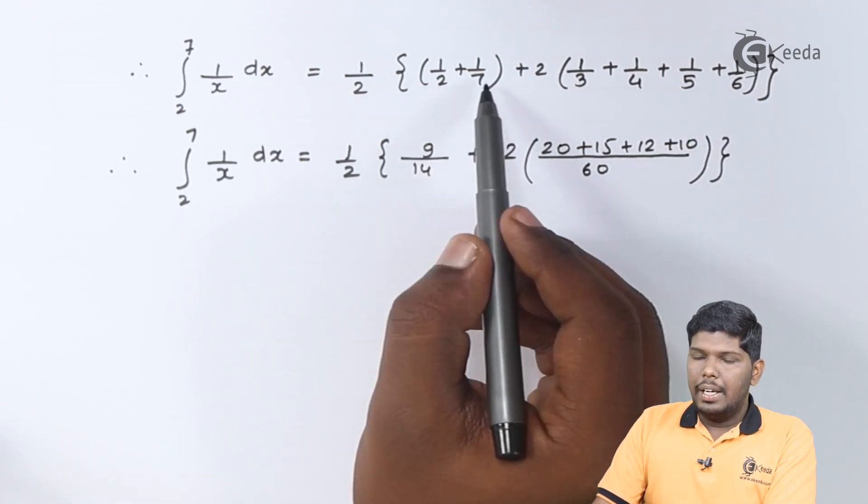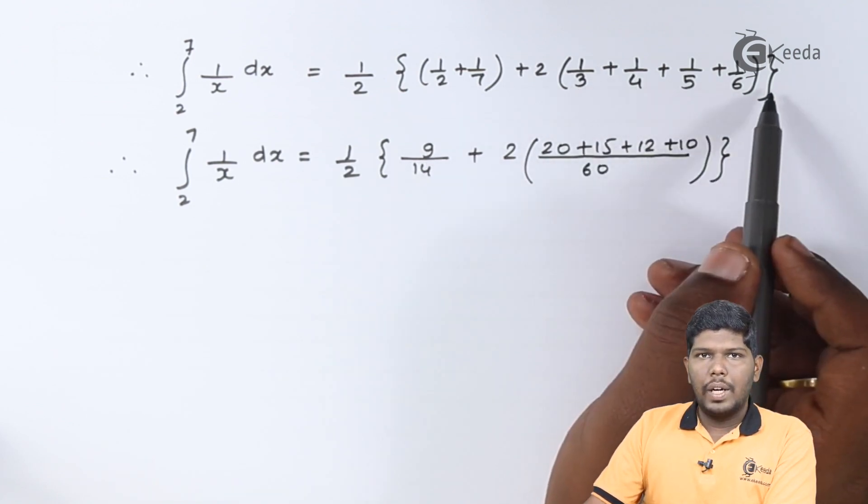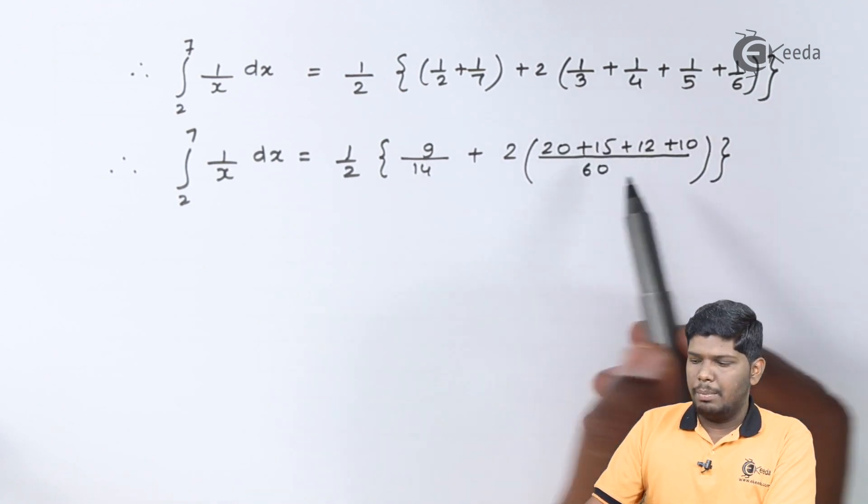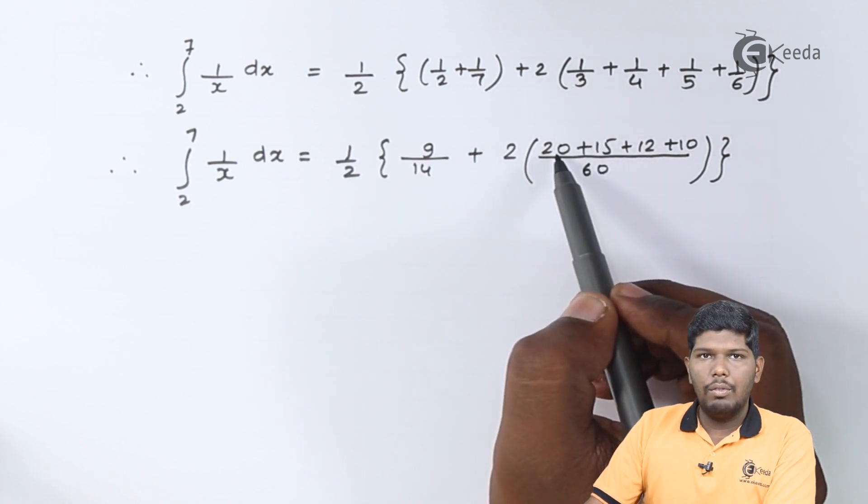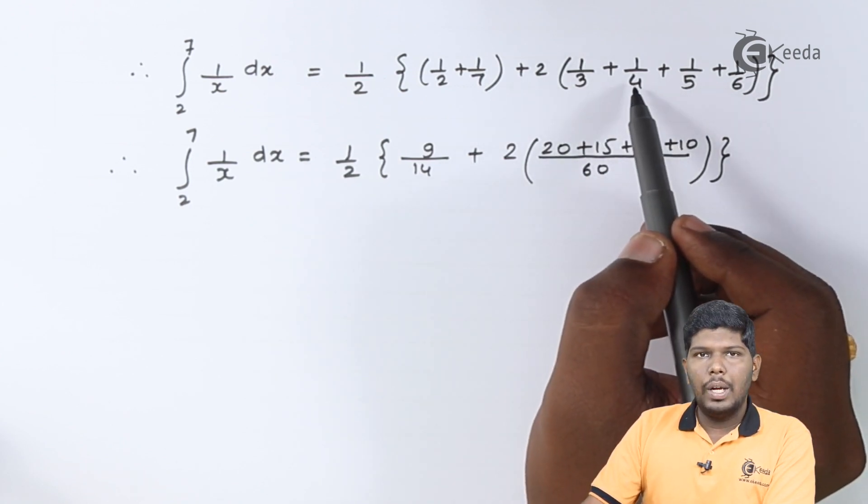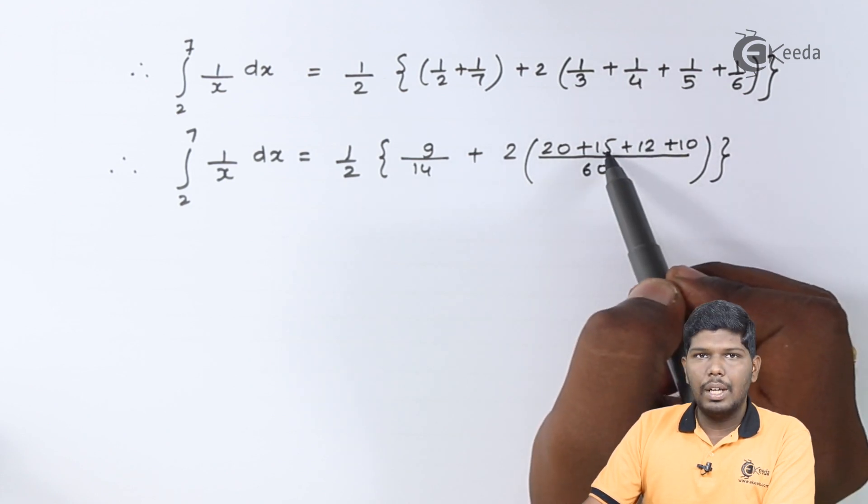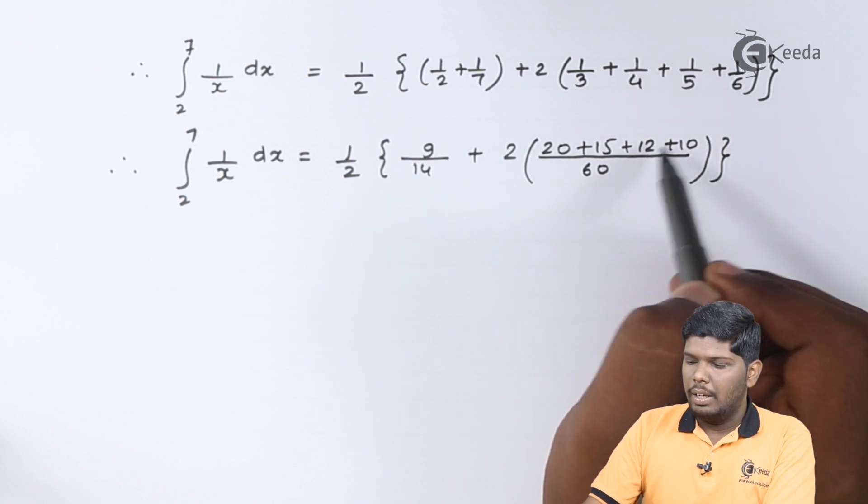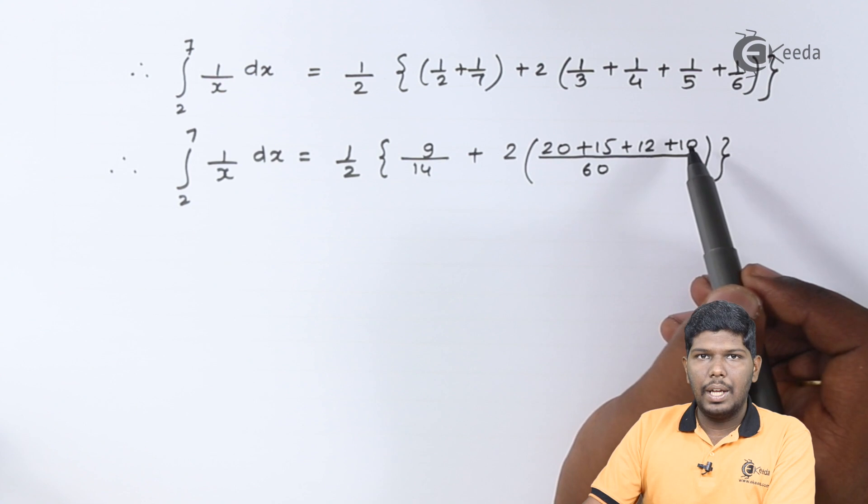In the next step we have added these 2 fractions that will give you 9 by 14, and from these 4 fractions we have taken 60 as their LCM. So to make this 60 we need to multiply this by 20, so 1 into 20 will give you 20. Similarly to make 4 as 60 we need to multiply it by 15, so 1 into 15 will give you 15. For 5 we should multiply by 12 and for 6 we should multiply by 10, so 1 into 10 will give you 10.